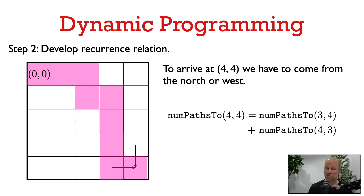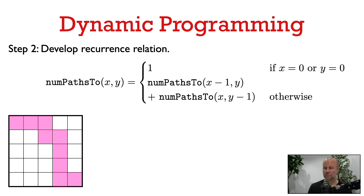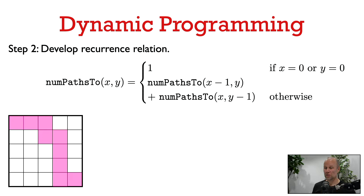If we can solve these two subproblems, we've solved our original problem. And how do we solve the number of paths to 3,4? We use the exact same technique. In general, the number of paths to cell x,y: if x,y sits on either the top row or the leftmost column, there's just one way to get there — you walk along the top row or the leftmost column. In all other cases, you can arrive from the north or the west, so the number of paths to x,y is the number of paths to x-1,y plus the number of paths to x,y-1.